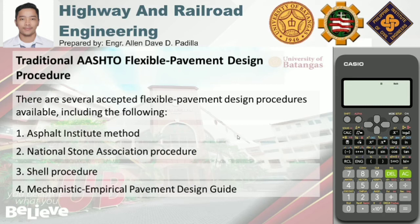The Shell procedure is based on a model in which the pavement structure is regarded as a linear elastic multi-layered system in which materials are characterized by their modulus of elasticity and Poisson's ratio. The Mechanistic Empirical Pavement Design Guide states that mechanics is the science of motion and the action of forces on bodies; thus, a mechanistic approach seeks to explain phenomena only by reference to physical causes.